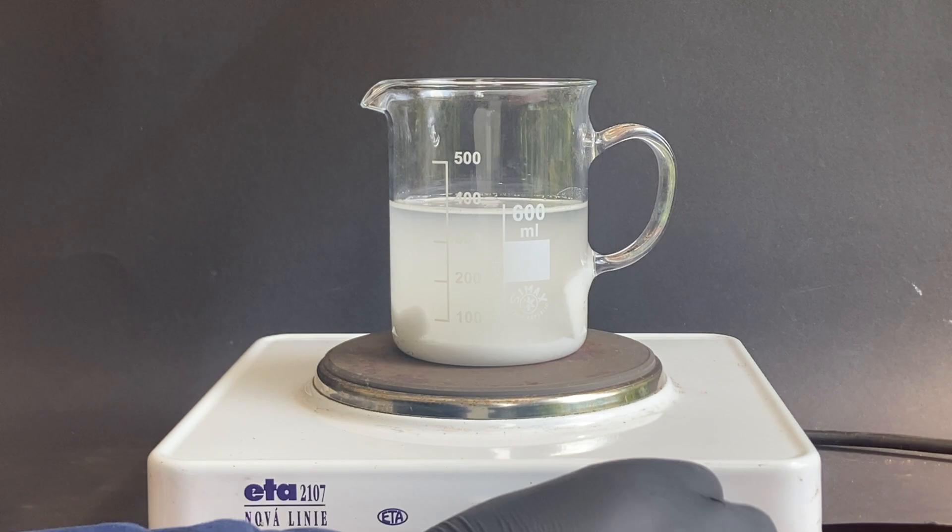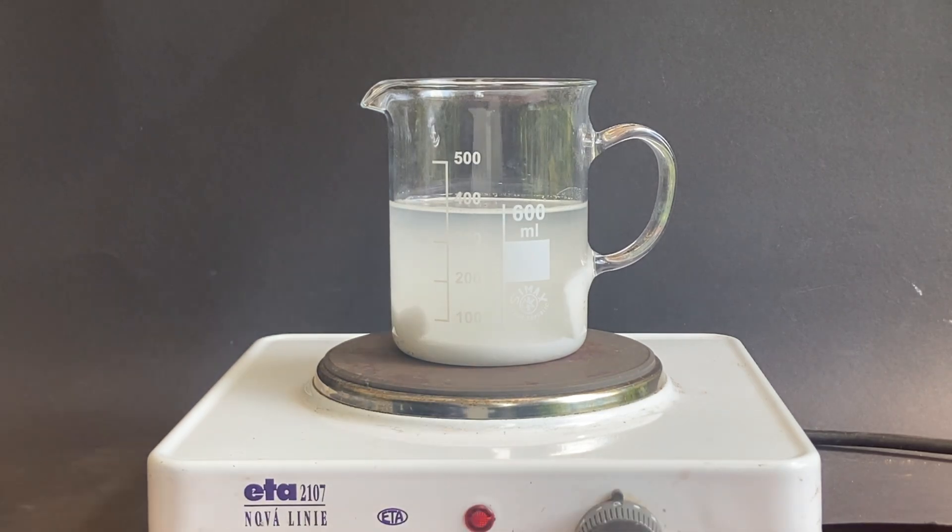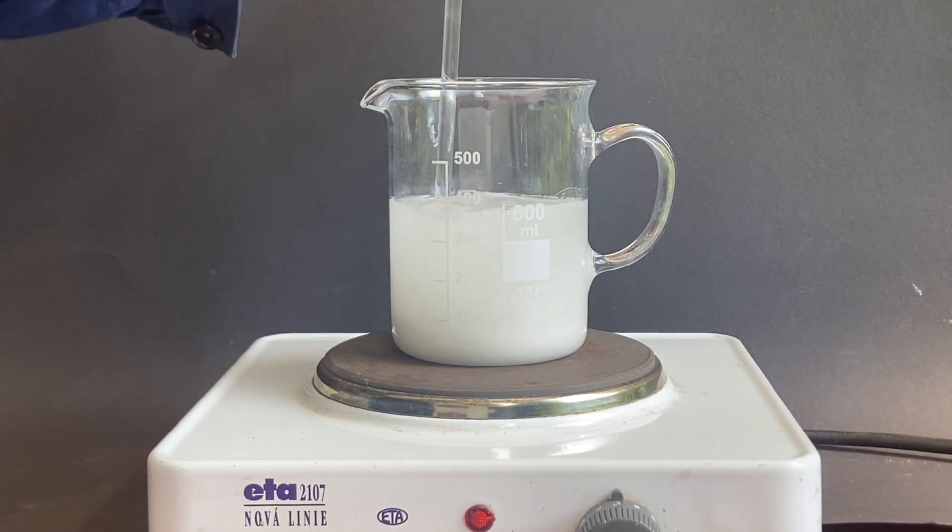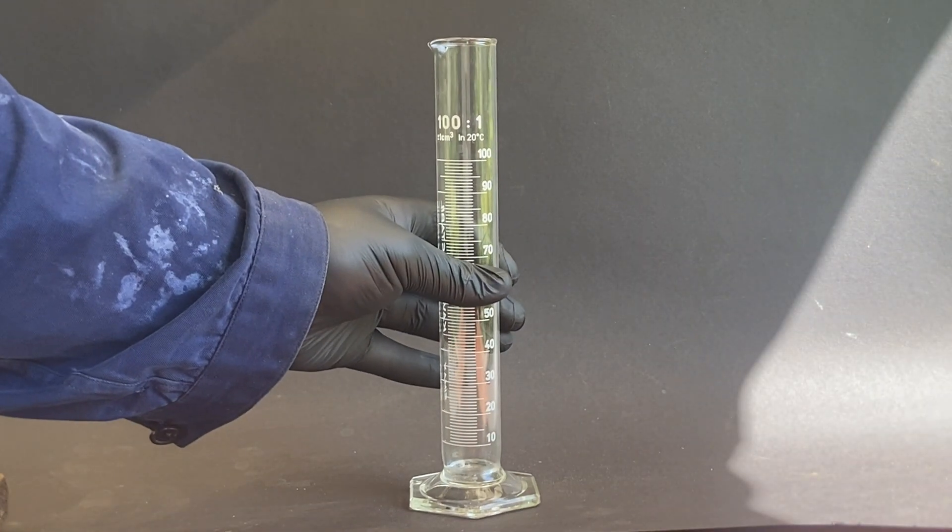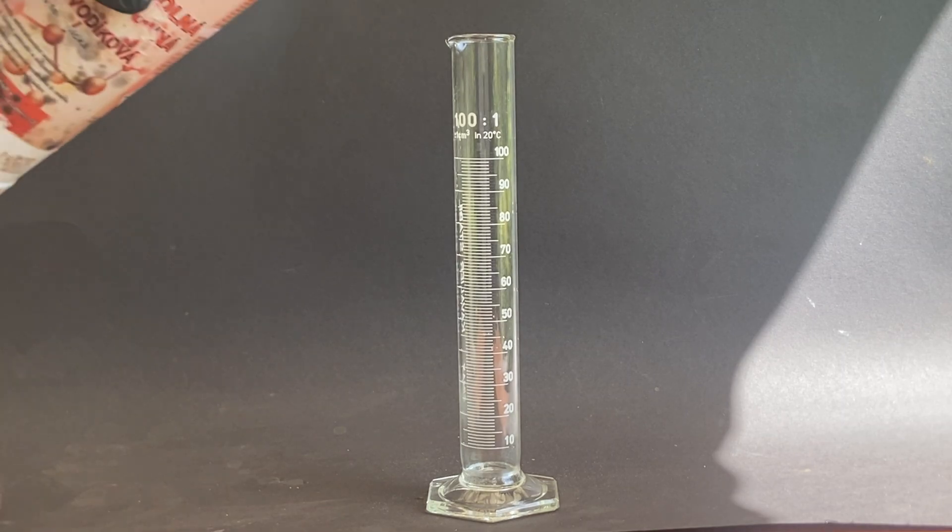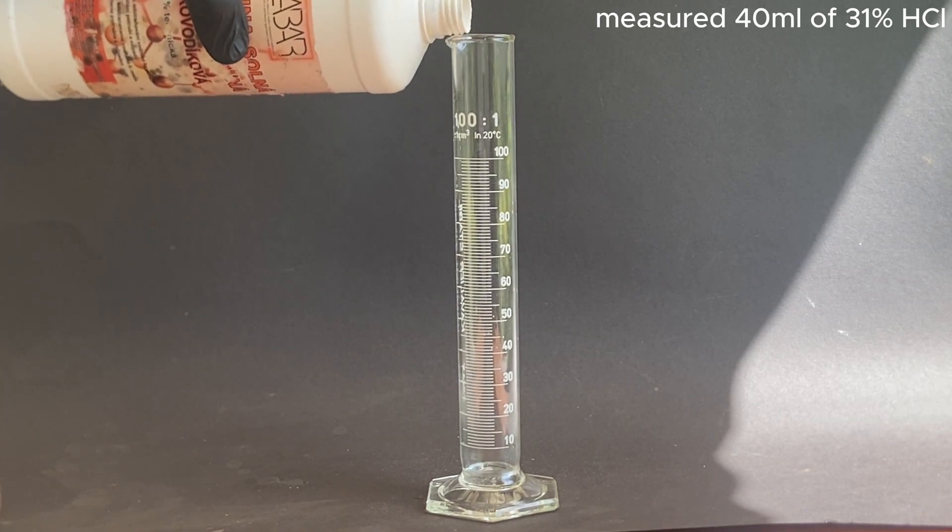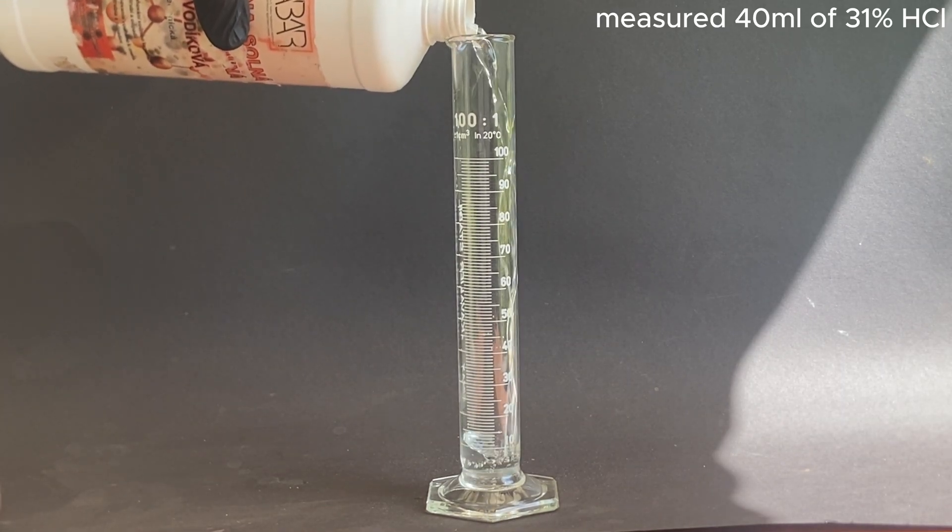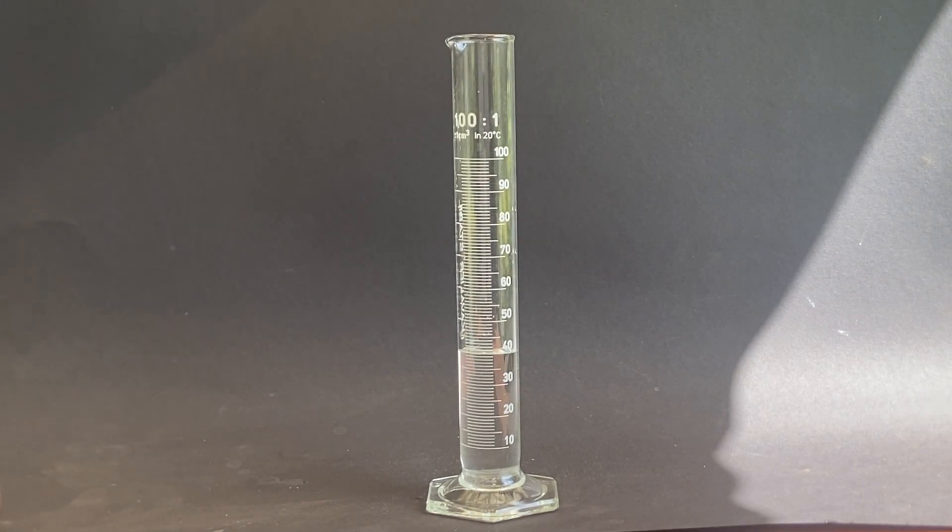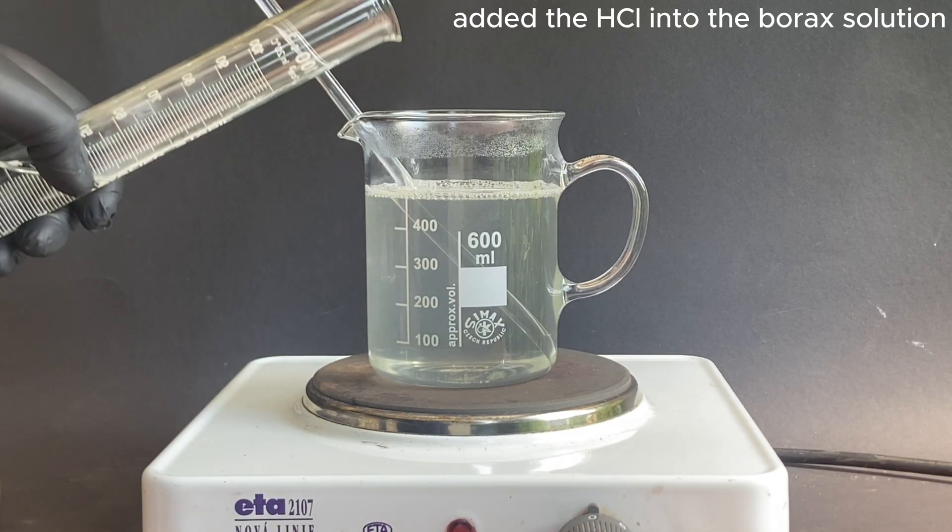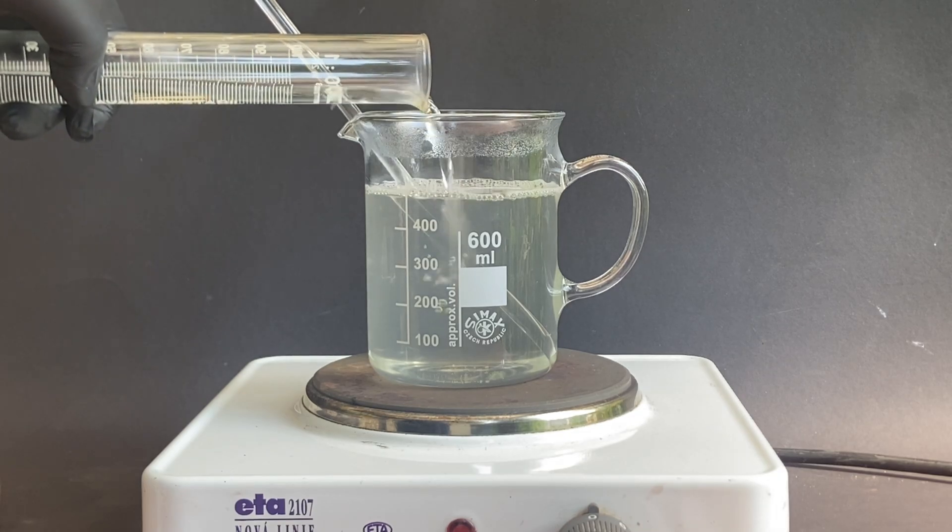Then I started heating the solution. In the meantime I measured 40 ml of 31% hydrochloric acid. After all the borax dissolved, I added the hydrochloric acid into the solution.